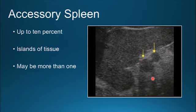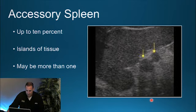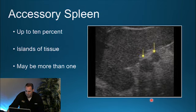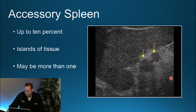Accessory spleen is not really an abnormality but more of a variant — up to about 10% of the population has an accessory spleen. They are generally located right near the hilum of the spleen and are islands of splenic tissue that mimic the spleen. Generally you find more than one, usually a cluster of two or three, as seen here by the hilum.